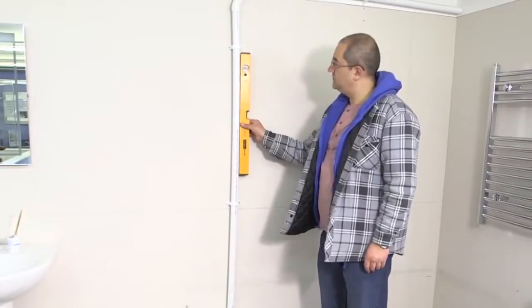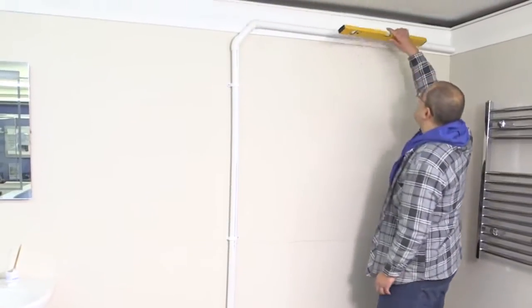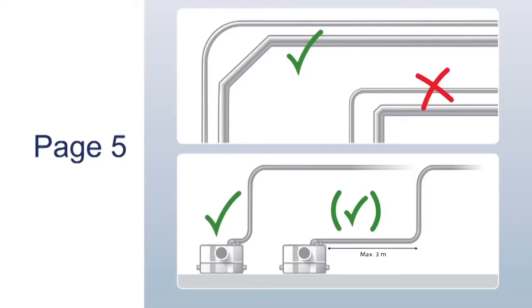Install the outlet pipes securely, ensuring that you use the correct bends and necessary fall, and connect to the soil stack. Please make sure you refer to your manual for recommendation for bends, distances and fall of the discharge pipe.